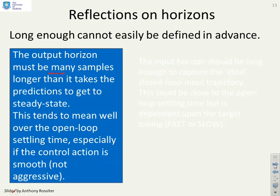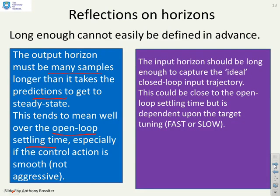And that's probably here. So the output horizon must be many more samples than it takes for the predictions to get to steady state, and usually this means well beyond the open loop settling time. You'll see in a couple of videos time we clarify exactly what we mean by that. The input horizon needs to be long enough, and this is the key thing, to capture the ideal closed loop input trajectory. So you have to have in your head an idea what is the ideal closed loop input trajectory and nu needs to be long enough so you can capture that. Because if it's not within your prediction class your optimization will not be able to find it. Now if you're using large values of lambda this could be close to the open loop settling time or even longer in fact.